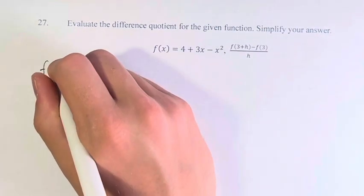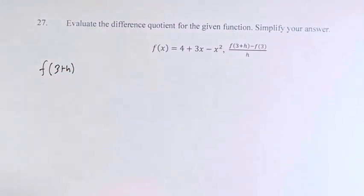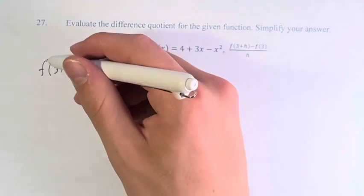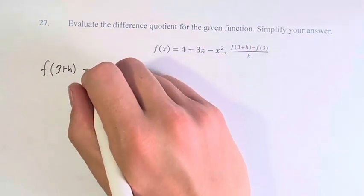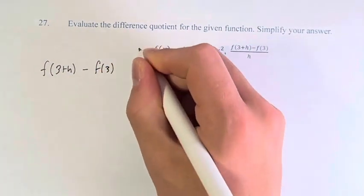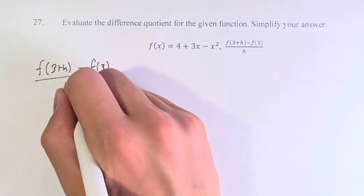So what is that actually going to look like? Well, f(3+h) just means that you have to plug in 3+h wherever you see an x. Minus f(3) means you're just plugging in a 3 anywhere you see an x. And then we're just dividing by h.